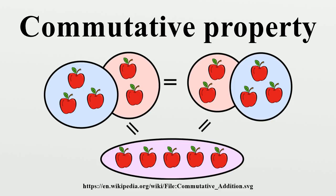The property can also be used in more advanced settings. The name is needed because there are operations, such as division and subtraction, that do not have it. Such operations are non-commutative operations.